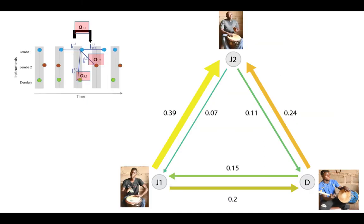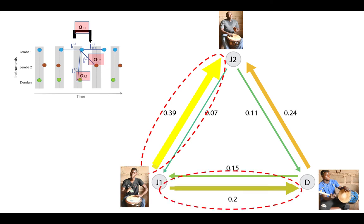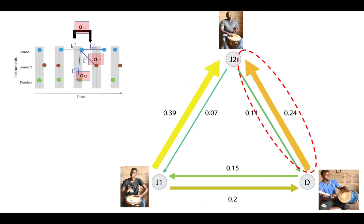Here are our average coupling constant results across the entire corpus. The error size and color represent the strengths of the coupling. What we find is that djembe 1 adapts the most to djembe 2, and also, to a lesser extent, to the dundun player. The dundun player adapts to djembe 2, and all other coupling constants are smaller.